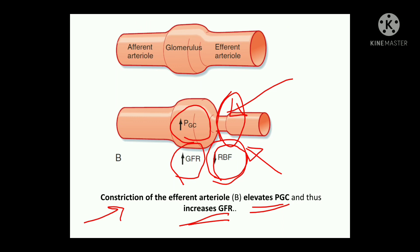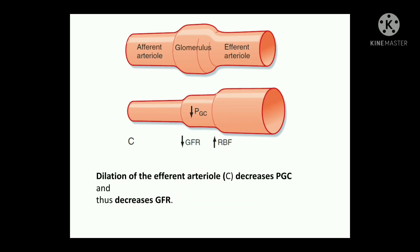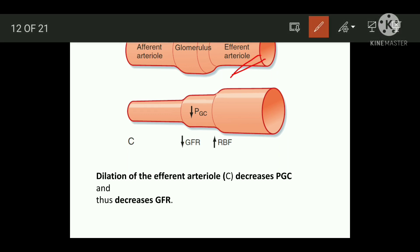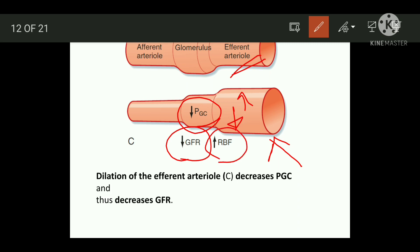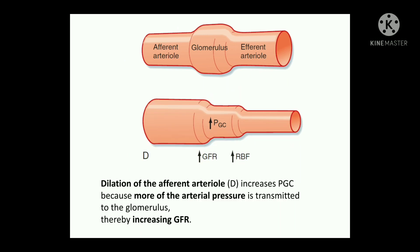Now we'll discuss the dilation of the efferent arterioles. Once there is dilation of the efferent arterioles, this will cause a decrease in the glomerular capillary hydrostatic pressure. Whenever the pressure decreases, this will also decrease the GFR. The renal blood flow will be increased because there is dilation. So dilation of efferent arterioles causes decrease in glomerular capillary pressure and decrease in GFR.